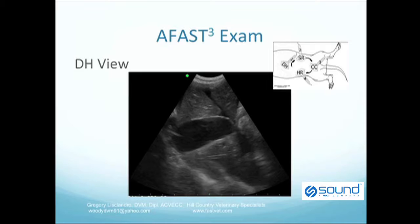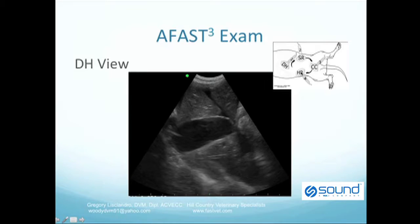We'll now start going through the target organ approach with the DH view. As you will see on the cartoon in the upper right hand corner, the DH view is located in the sub-xiphoid region, and we go in order from there to the SR view, to the cystocolic view, to the home run view. Since I like baseball, we're basically going around the horn — or around the bases — however in a backward direction.